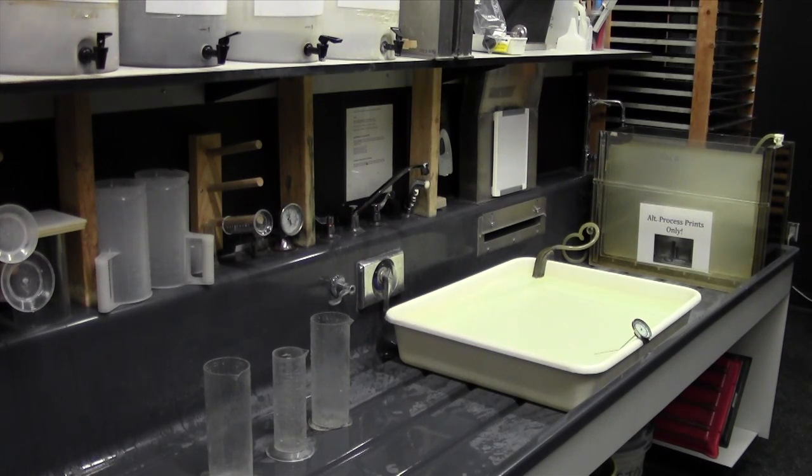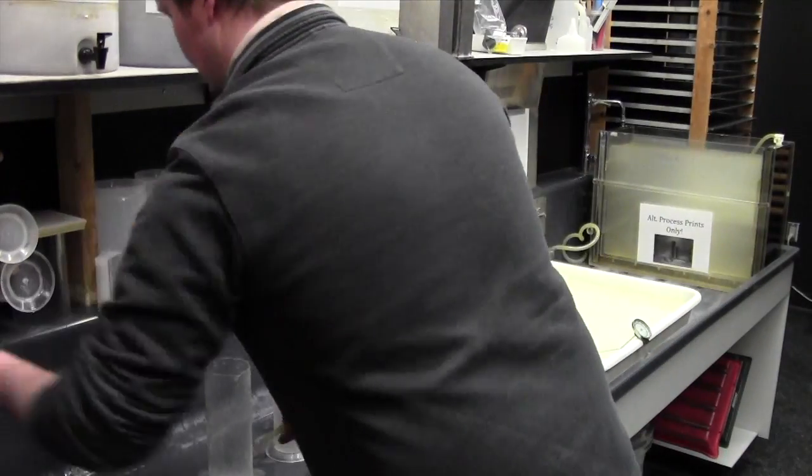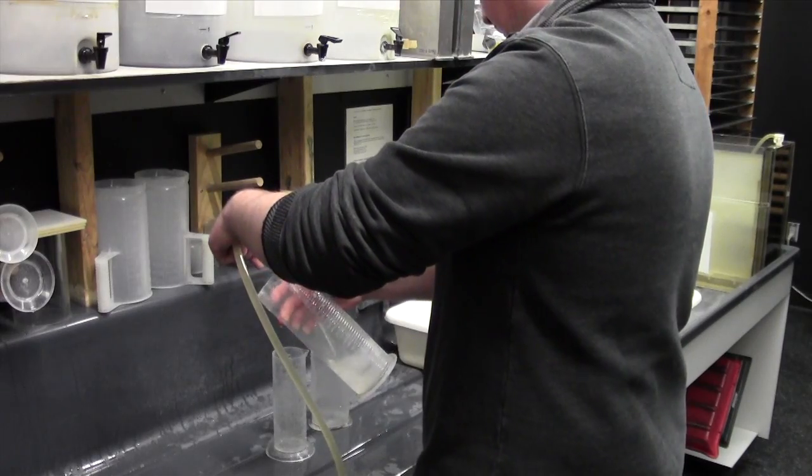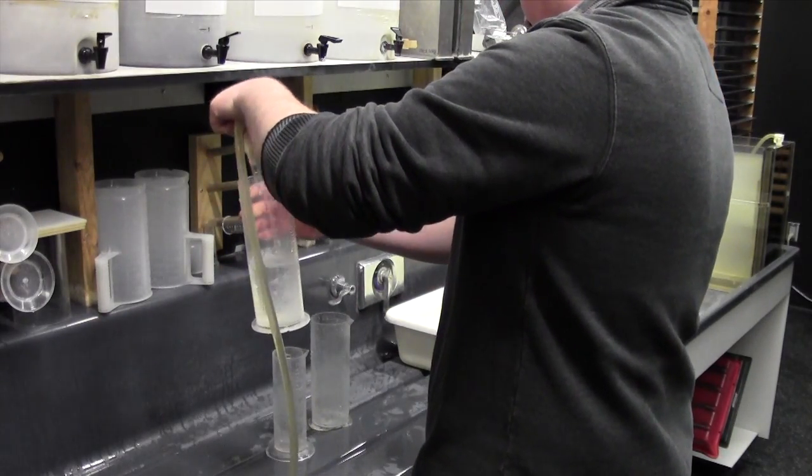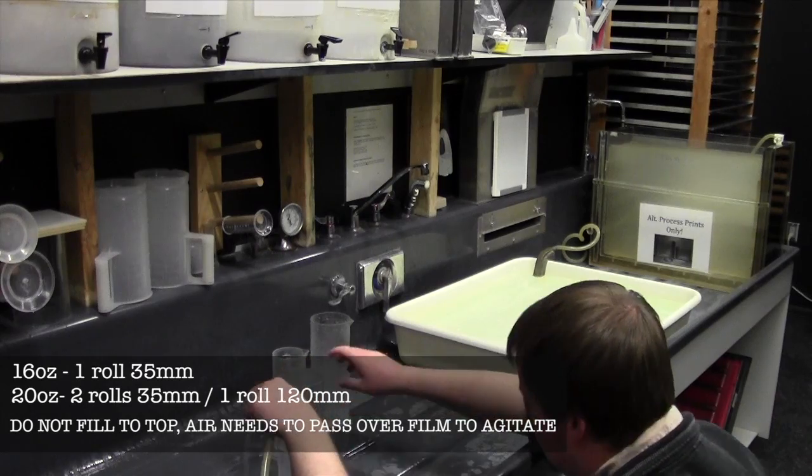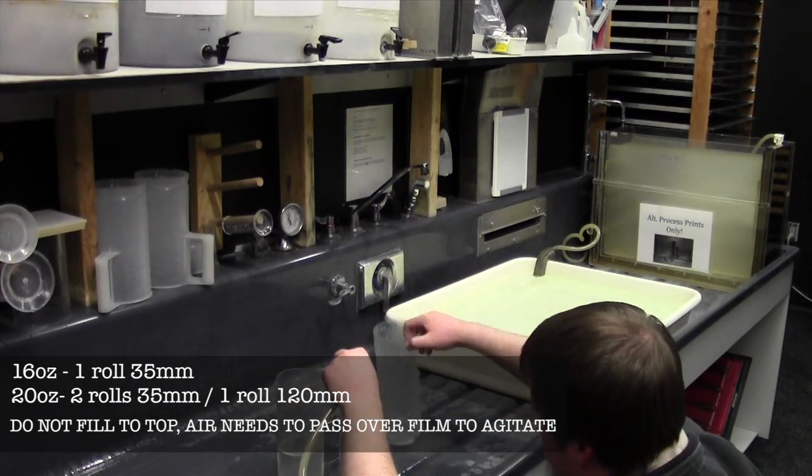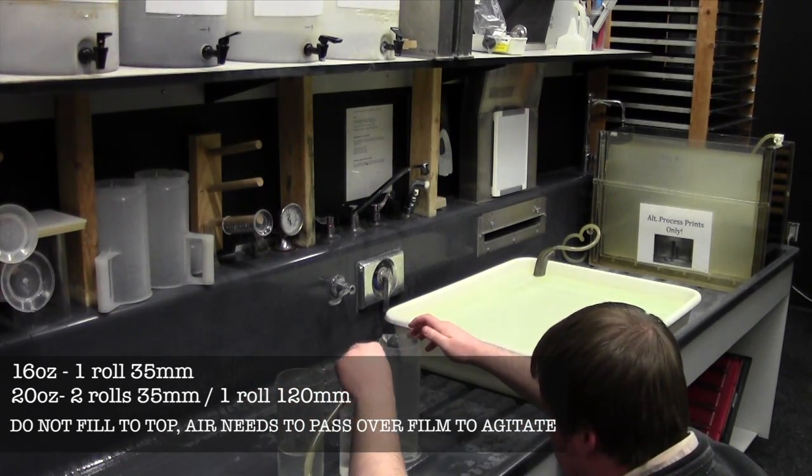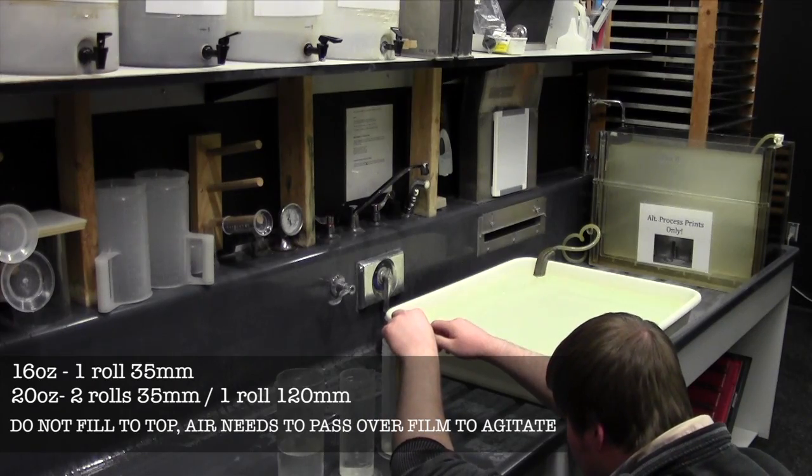A proper temperature ensures that the film does not flex while it's developing going from bath to bath, which can alter the resolution of the film and the contrast overall. I'm filling these cylinders with 20 ounces of fluid. For tutorial purposes, I'm only going to fill it with water instead of actually using chemistry.